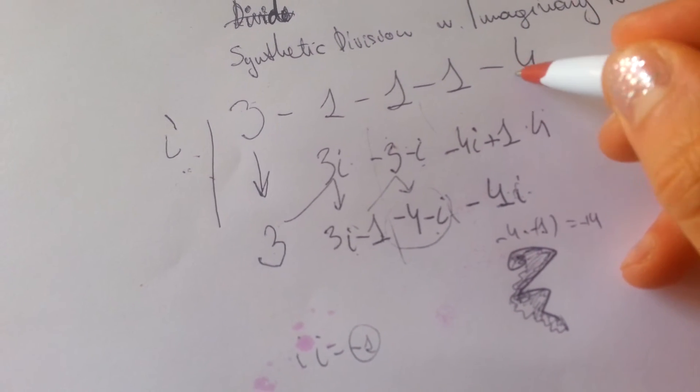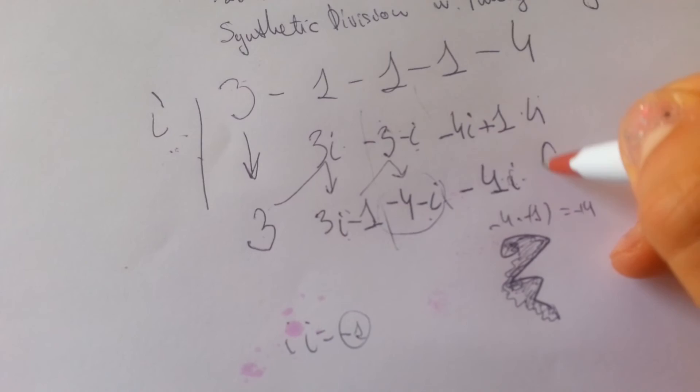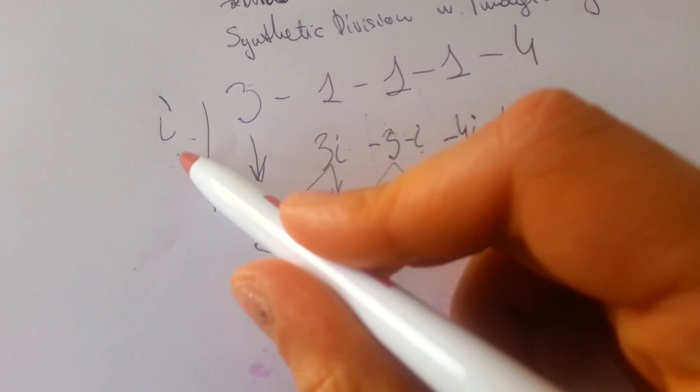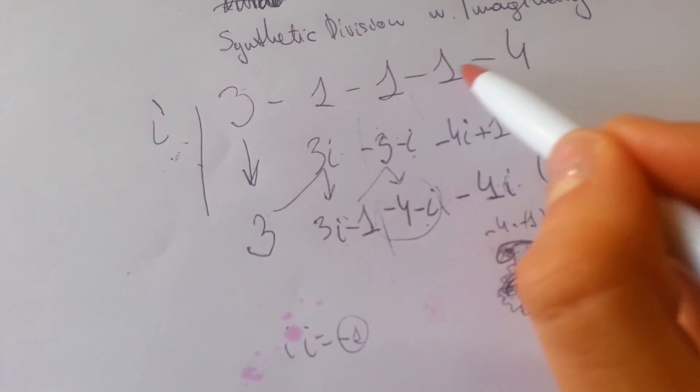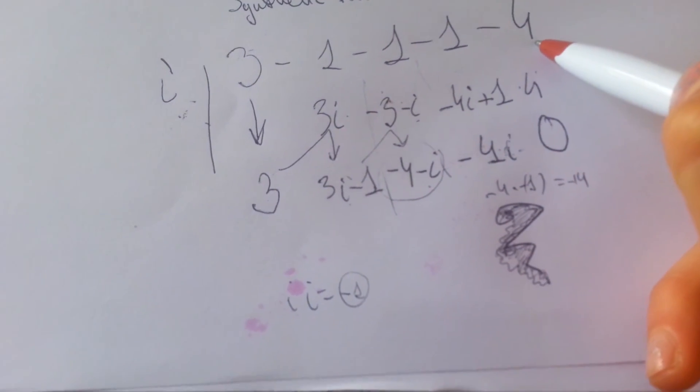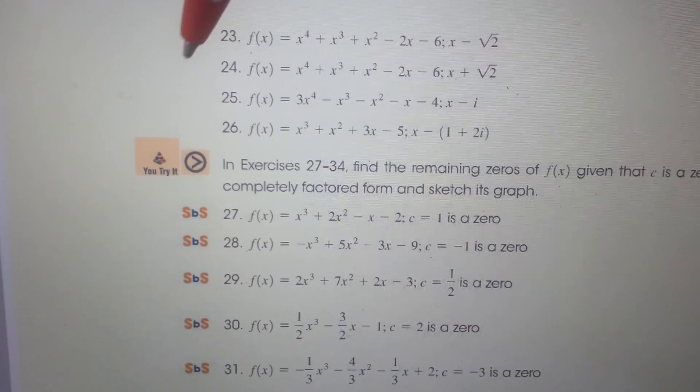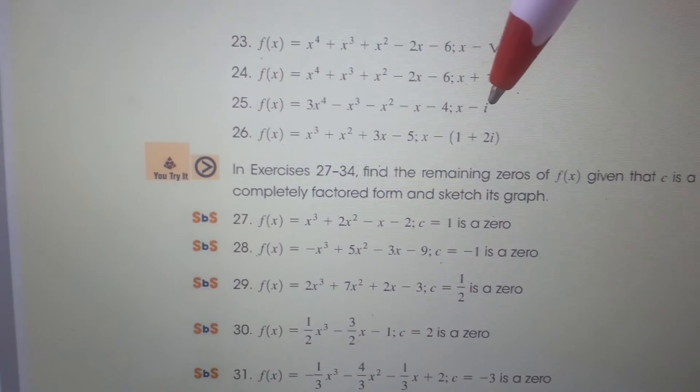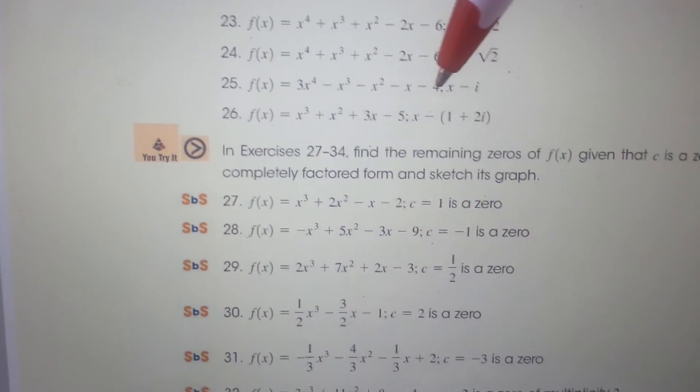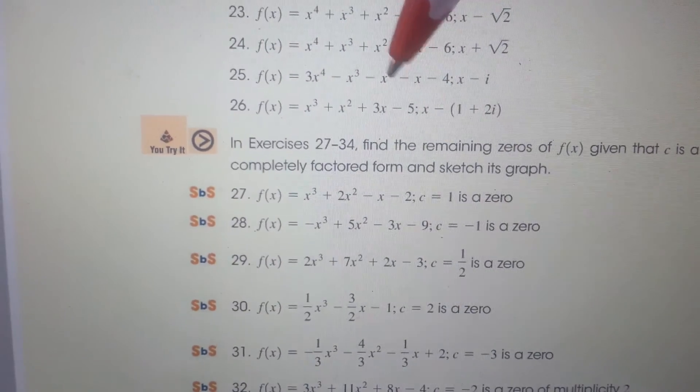So we get 4, minus minus 4 we get 0, and that means i is a factor of this problem. This was our problem and the answer is i is a factor of this. Thank you for watching.